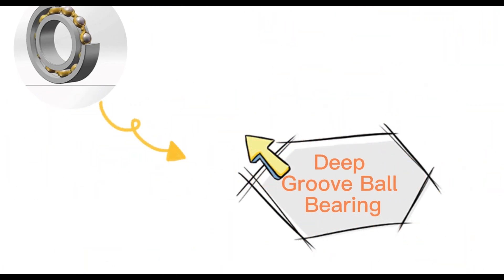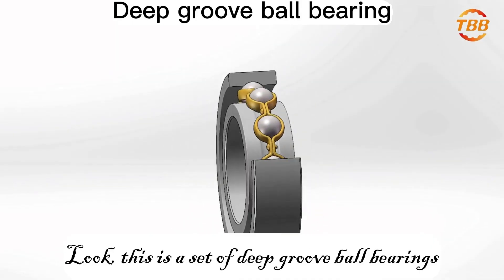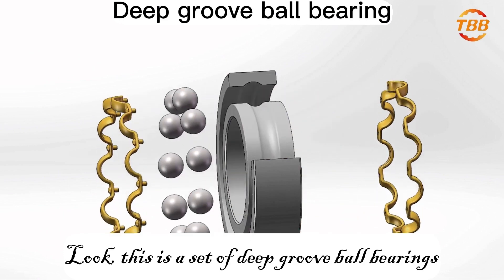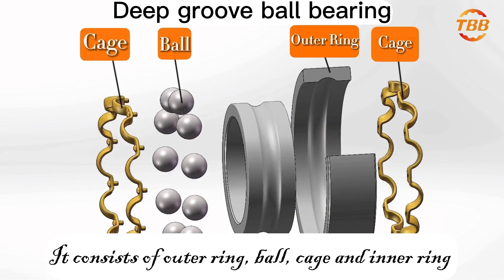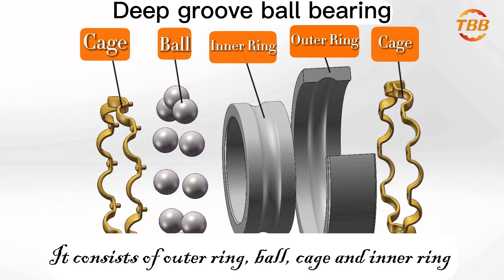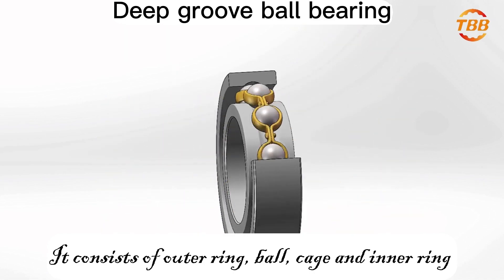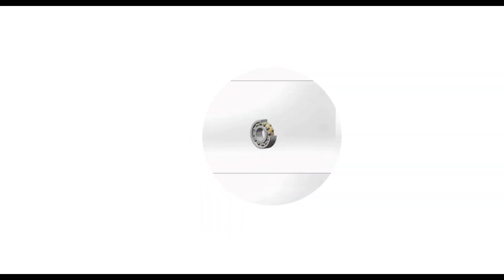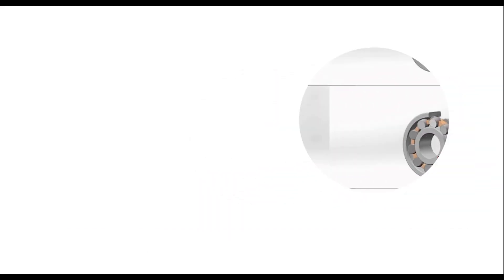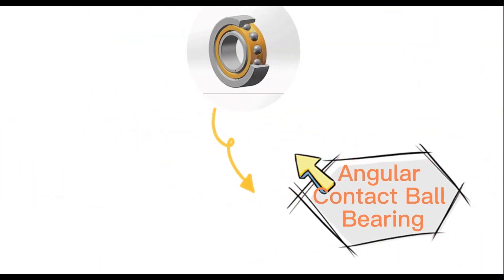This is a set of deep groove ball bearings. It consists of outer ring, ball, cage, and inner ring. It is mainly used to withstand radial loads and unidirectional axial load.